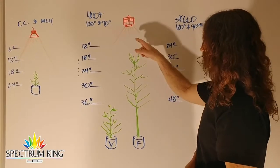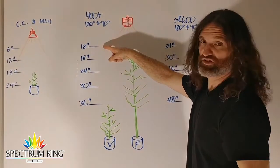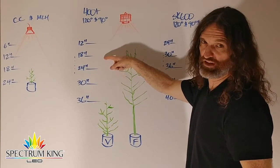During flower, your 400+ 120 can be 12 to 18 inches over the canopy. Your 400+ 90 can be 18 to 24 inches over the canopy in flower.